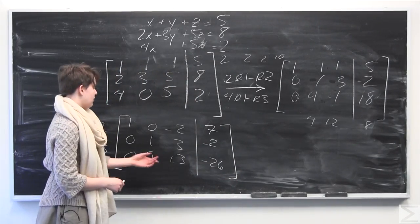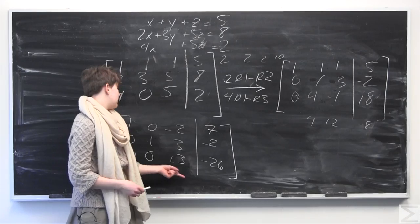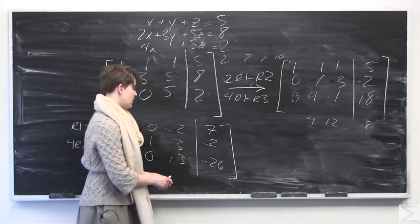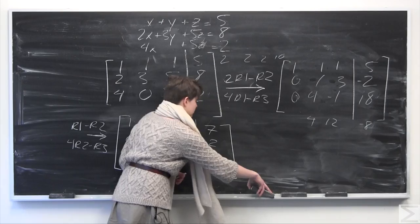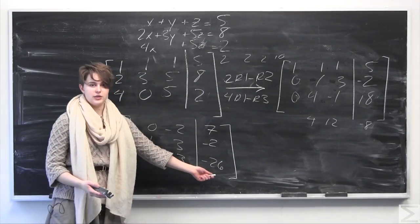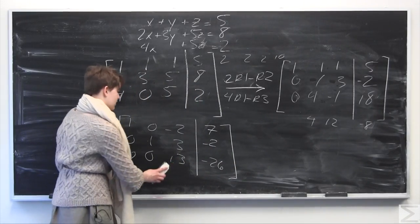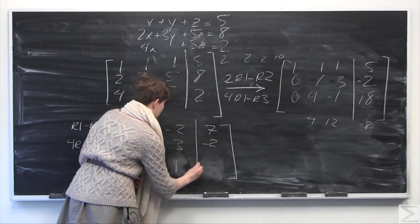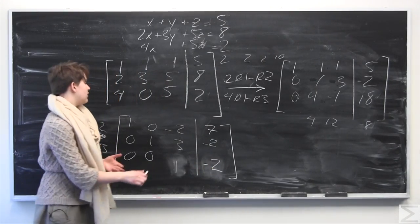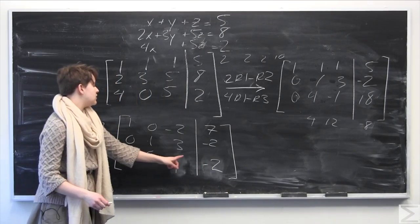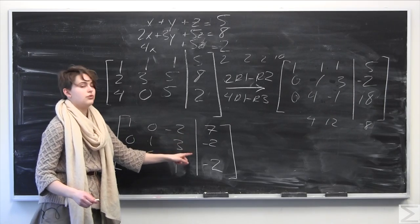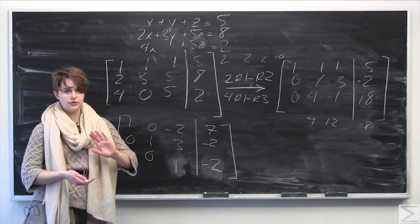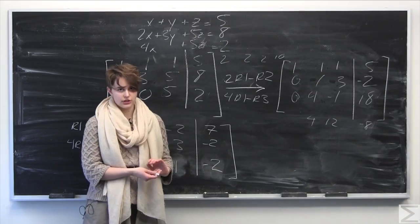Now we need to get the leading one in the third row, because we have leading ones in rows one and two. We have thirteen and negative twenty-six in the third row, so I'm going to divide the entire last row by thirteen to get one and negative two. So the third row becomes zero, zero, one, negative two. Now all we need to do is clear out the last column entries in rows one and two — negative two and three — since they need to be zeros for reduced row echelon form.